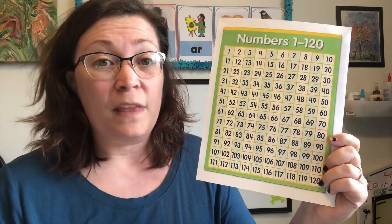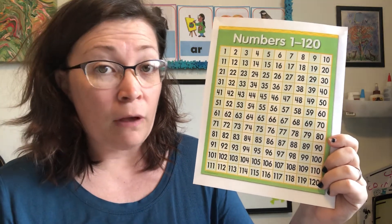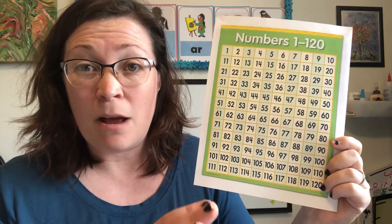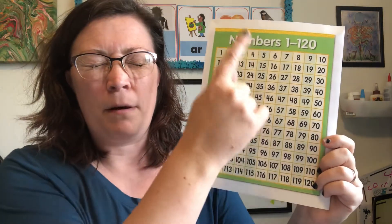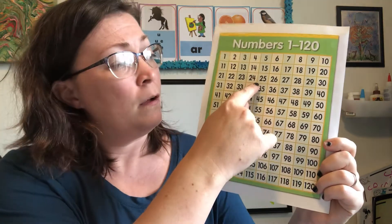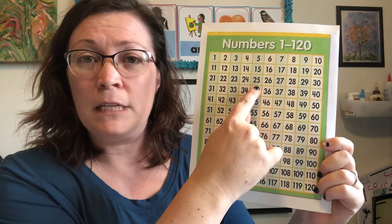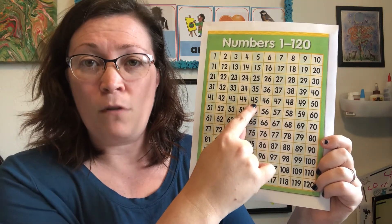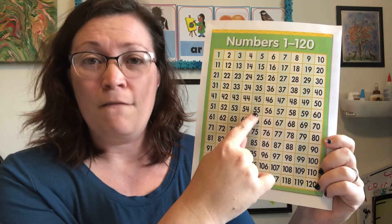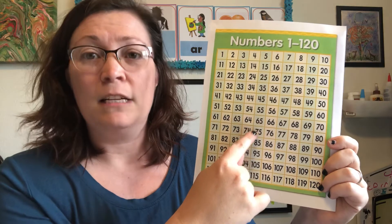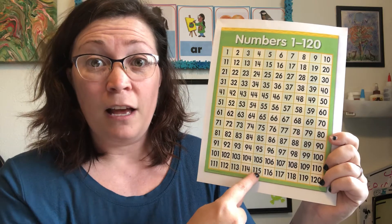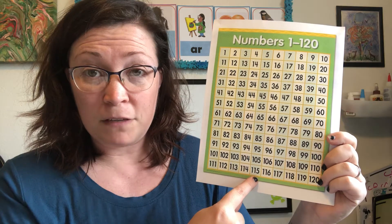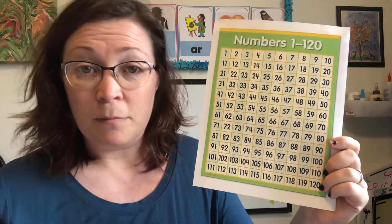You can count by tens starting from any number on this chart. We could even close our eyes and pick a number. We're gonna start at 25. Let's count by tens: 35, 45, 55, 65, 75, 85, 95, 105, 115. You can just keep going.